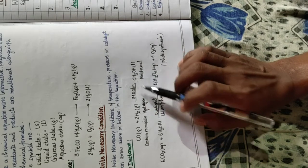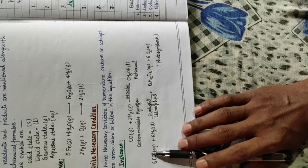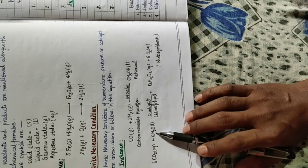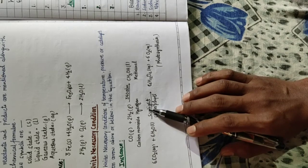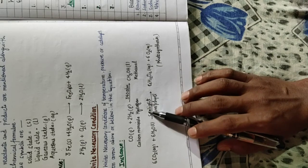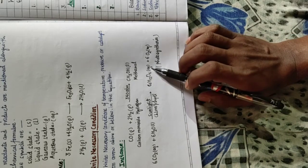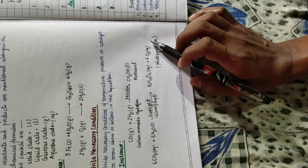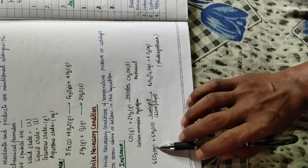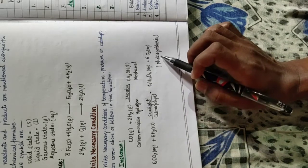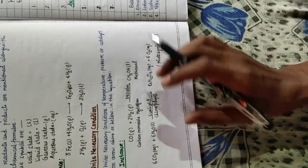The second example is photosynthesis. Aqueous carbon dioxide reacts with liquid water in the presence of sunlight and chlorophyll — these are the necessary conditions, where sunlight provides the energy and chlorophyll is the catalyst. It forms aqueous glucose and releases oxygen gas. In the absence of sunlight and chlorophyll, photosynthesis will not take place, so these are the necessary conditions.